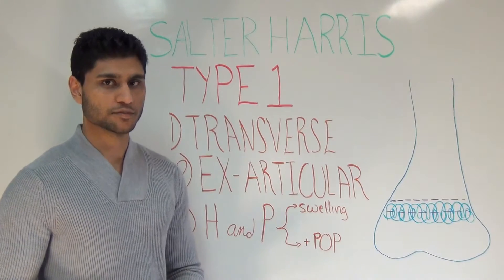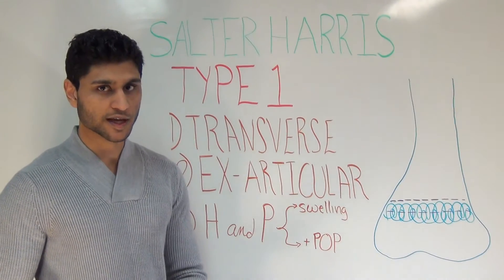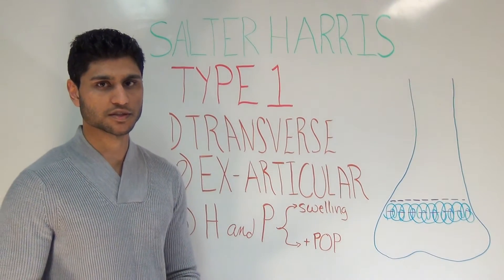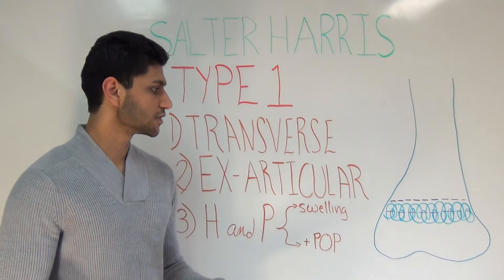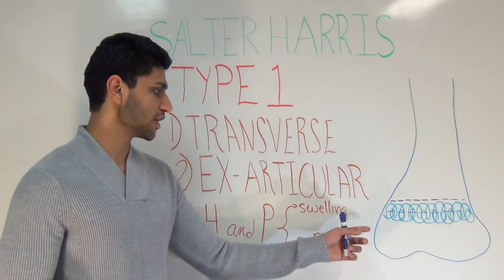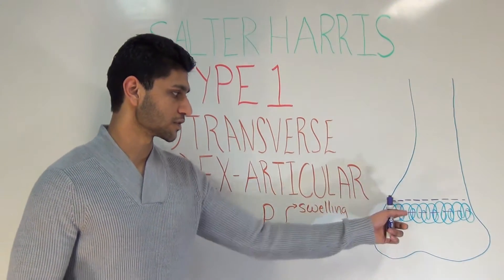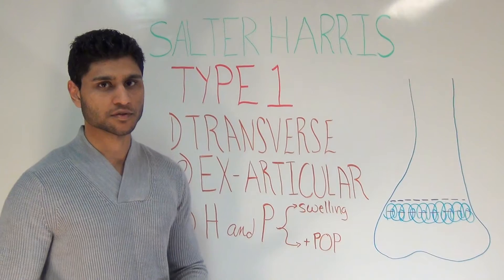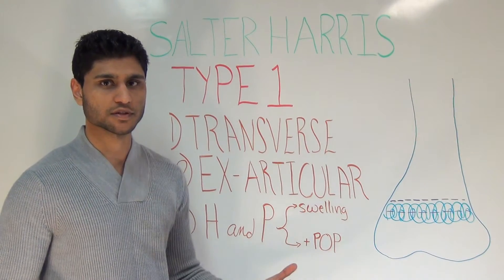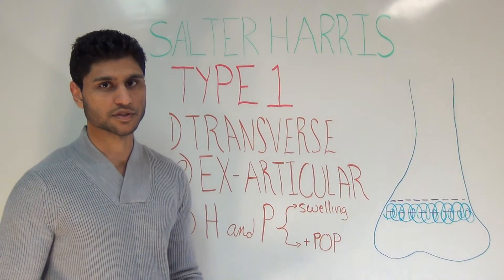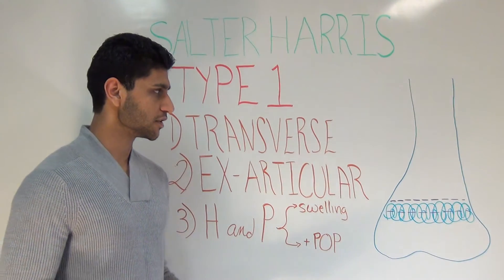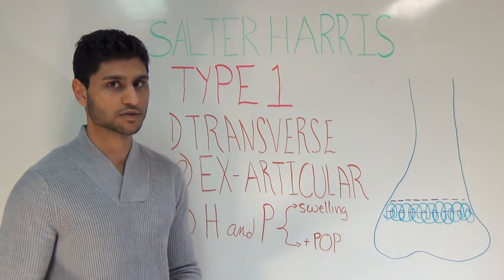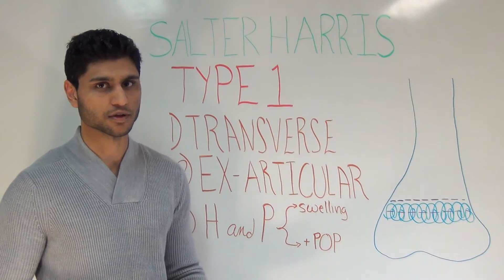One thing that I forgot to mention during the anatomy review is the location of the growth plate. Some authors will say it is found along the metaphysis, while others will say it is found at the metaphyseal-epiphyseal junction, but basically it's found at the proximal or distal ends of the long bones.